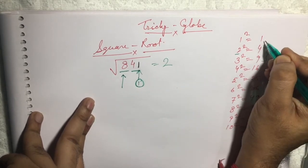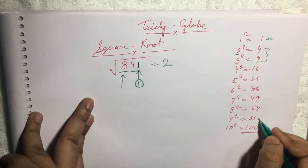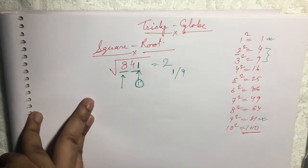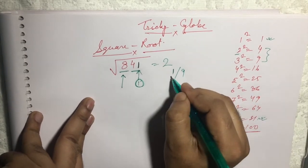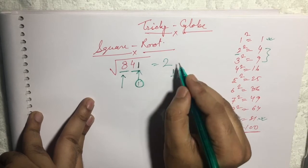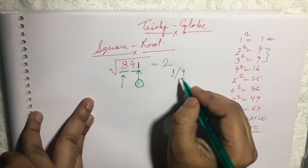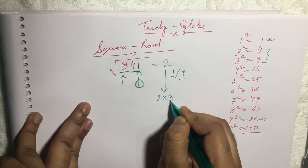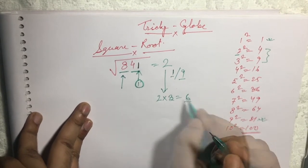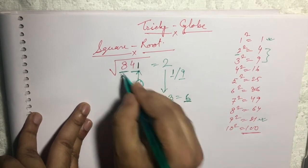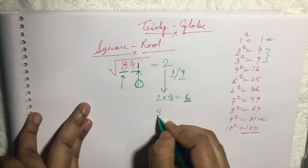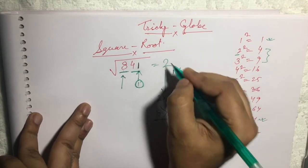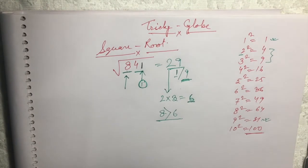Now to find the other digit, we check the first digit of the last pair, which is 1. The number 1 appears in the unit digit of 1 squared and 9 squared, so the answer will end in either 1 or 9. To find which one, multiply 2 by the next number: 2 times 3 is 6. Since 8 is bigger than 6, we take the bigger number, that is 9. So the answer is 29.